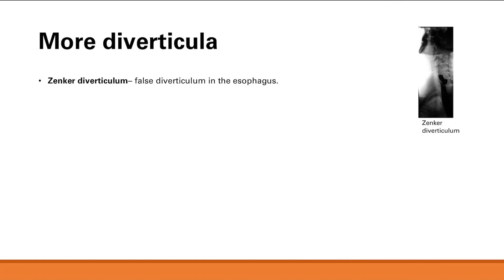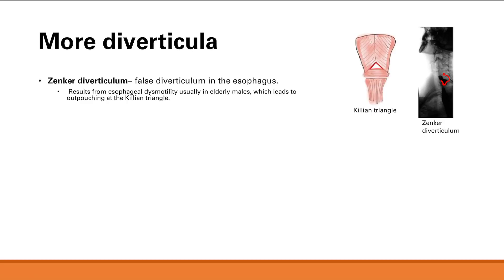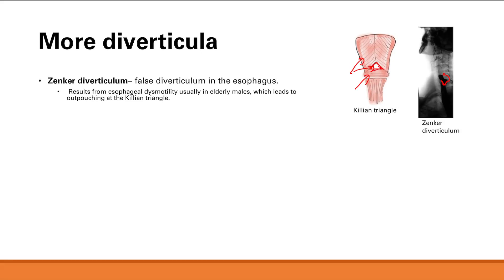Next is Zenker's diverticulum, which occurs in the esophagus — as opposed to the colon we were just discussing. This is a nice picture showing the diverticulum outpouching right here. It results from esophageal dysmotility in older patients, meaning increased pressure inside the esophagus because food isn't being propelled down to the stomach as easily. The outpouching occurs in the Killian triangle, which is the area between the thyropharyngeal and cricopharyngeal muscles — a relatively weaker area.